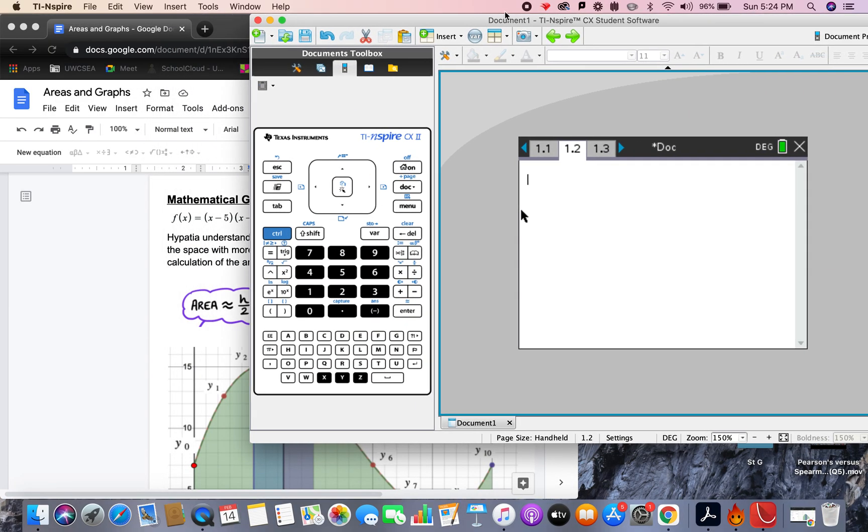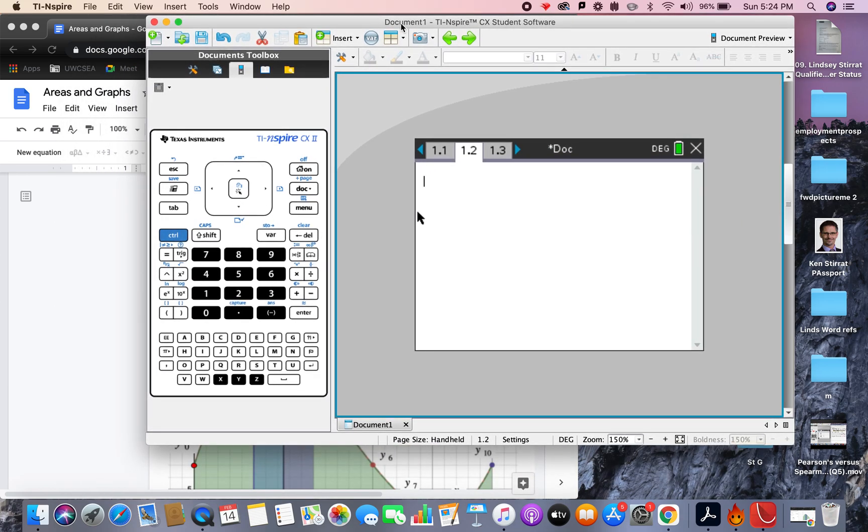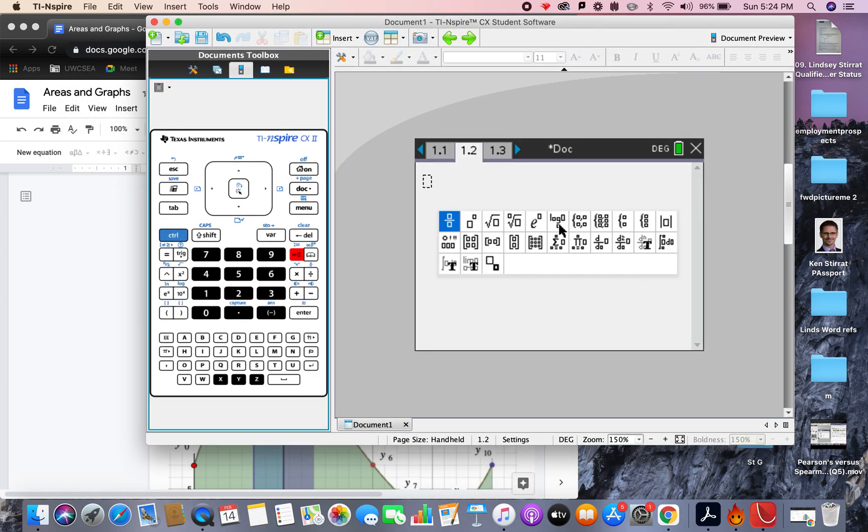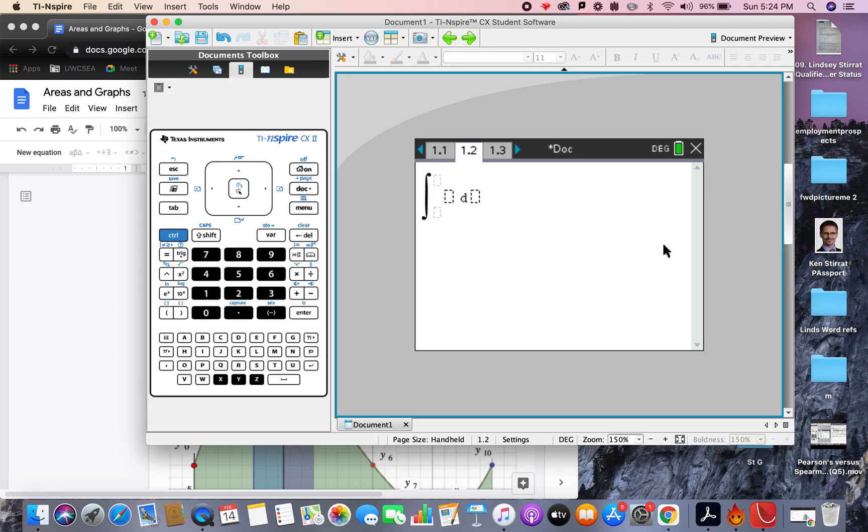For finding the area under the curve, we can actually write it down in mathematical notation, so on here, there's a magic button here, on the menu there, and this is actually the area function. So 0 up to 5 we had, and then we just type in the function here.